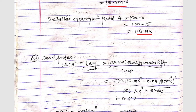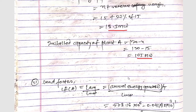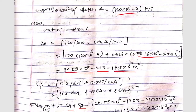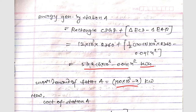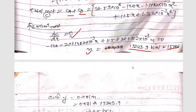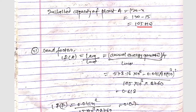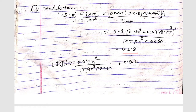The load factor of plant A = annual energy generated / (L_max × T). EA = 578.16 × 10⁶ − 0.041X², substituting X = 15 MW, divided by L_max = 105 × 10³ kW and T = 8760 hours, gives load factor of A = 0.618. For plant B: EB = 0.041X² divided by 15 × 10³ × 8760, giving load factor of B = 0.07.